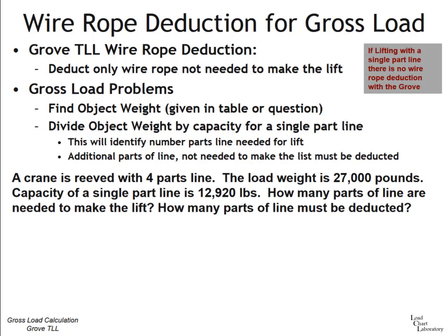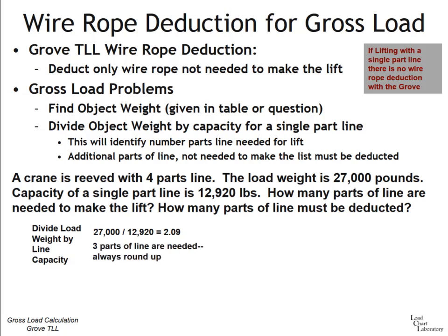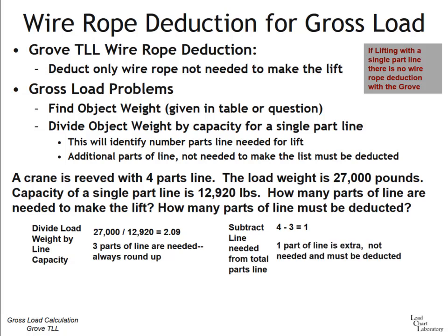Here's an example: the crane is reeved with four parts of line, the load weight is 27,000 pounds, and the capacity of a single part of line is 12,920 pounds. Divide 27,000 by 12,920, which equals 2.09. When calculating parts of line, always round up — so 2.09 becomes three parts of line needed. Subtract the needed parts from total: four minus three equals one extra part of line that must be deducted.